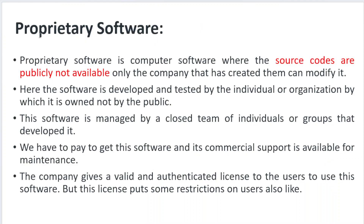Proprietary software means the source code is not completely and freely publicly available — you cannot make any modifications. Whatever software the company produces, you have to use it as-is. The software is developed and tested by an individual or organization that owns it, not by the public, and managed by the team that developed it. One important point is that you have to pay for proprietary software and use it for commercial purposes.